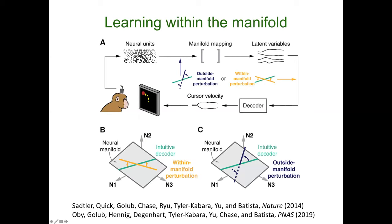For my last point, I want to discuss very recent work asking: when you execute a behavior over and over again — like serving a tennis ball or playing a piano sonata daily — is there a manifold in primary motor cortex that is as stable as your behavior? We tested this in a simple reaching task, verifying that behavior was very stable over almost two years of recording from a monkey. The problem is that our implanted electrode array is not recording from the same neurons day to day — so how can we verify whether there is a stable manifold with stable neural dynamics?